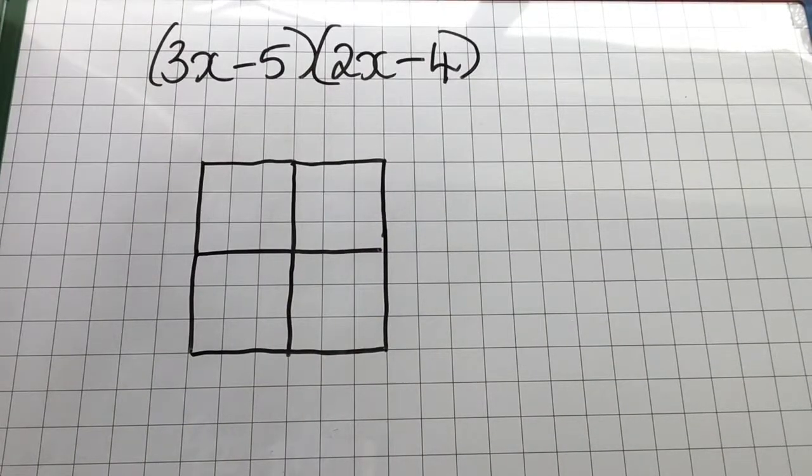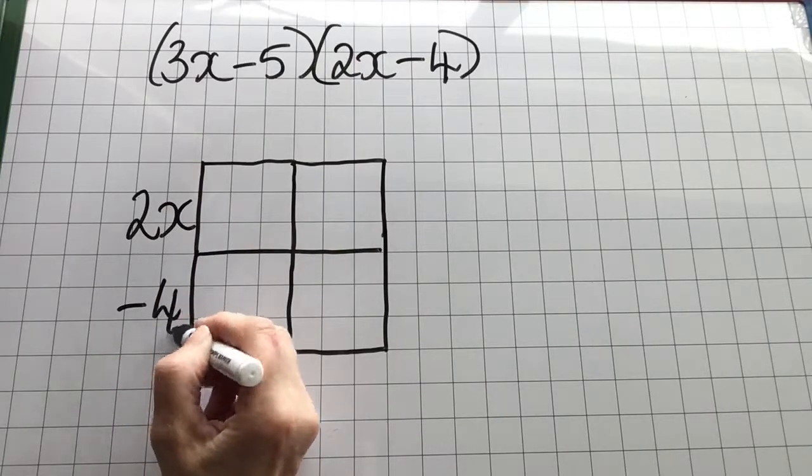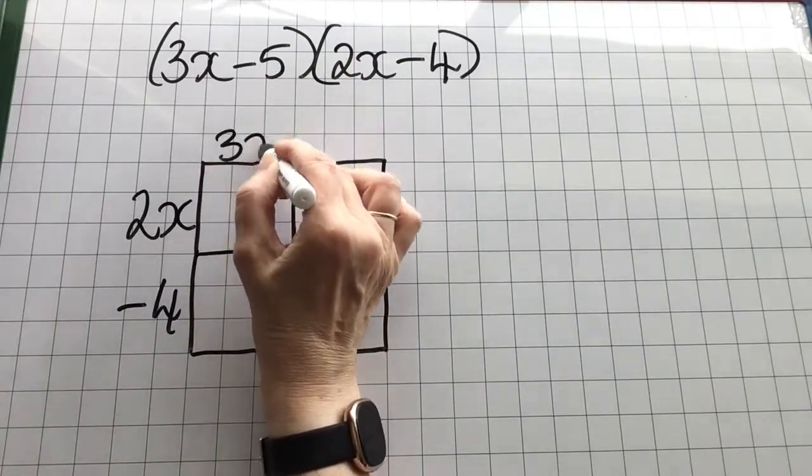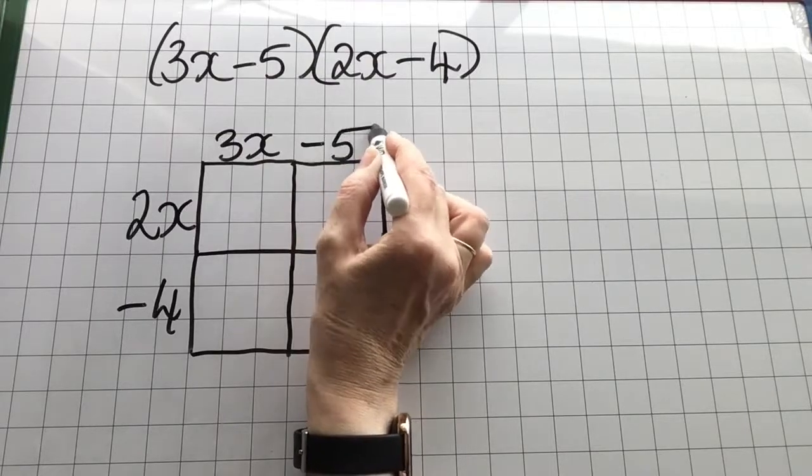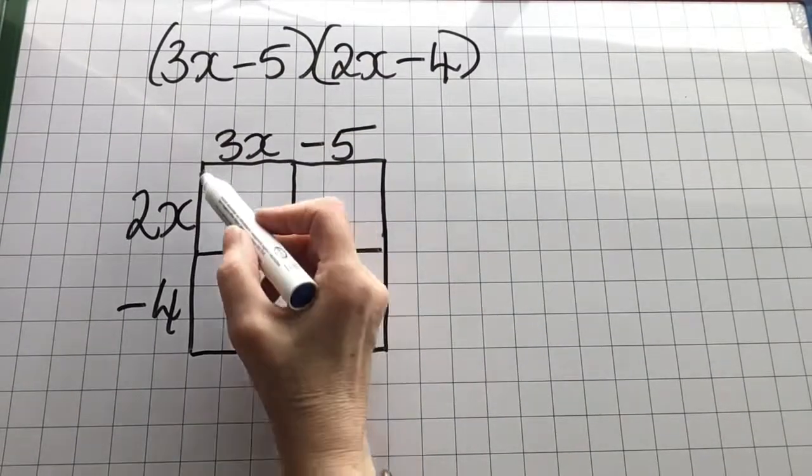Here I have another two expressions with two terms in them multiplied together. Notice this time I have minuses in both brackets. So again I set it up like I did all of the others, and now I do my multiplication.